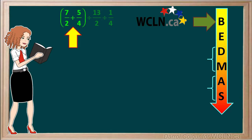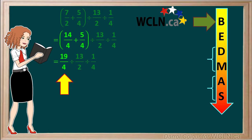It is 7 over 2 plus 5 over 4. In order to add fractions, they need to have a common denominator. We can change 7 over 2 to 14 over 4. 14 over 4 plus 5 over 4 gives us 19 over 4.